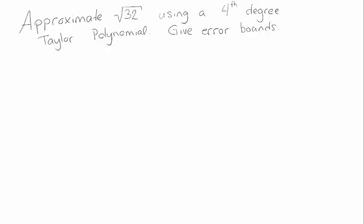Suppose we want to approximate the square root of 32. We're going to do it using a fourth degree Taylor polynomial, but we also need to know how accurate our approximation is going to be, so we're going to have to give some error bounds.